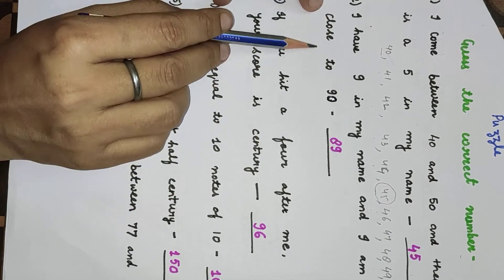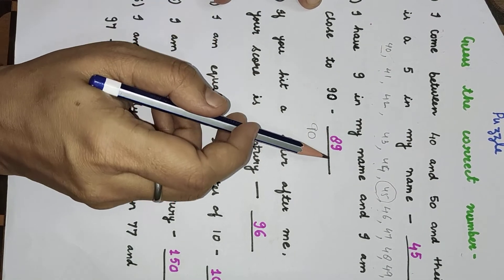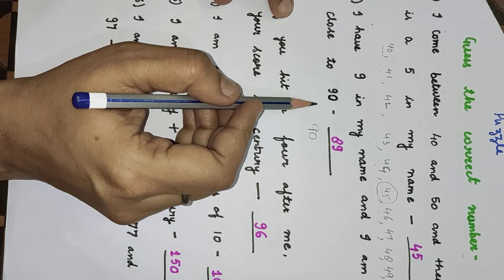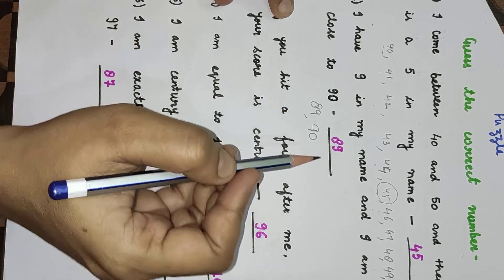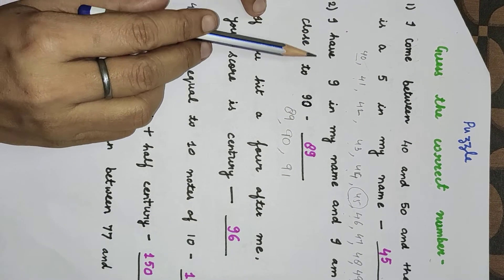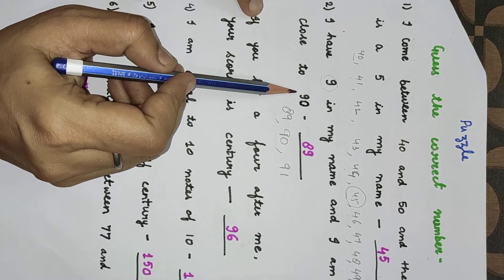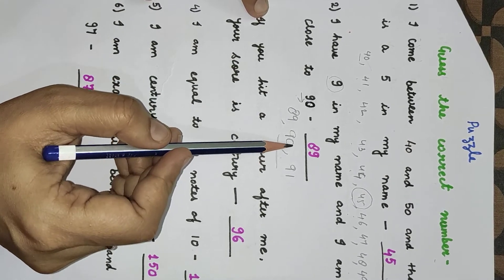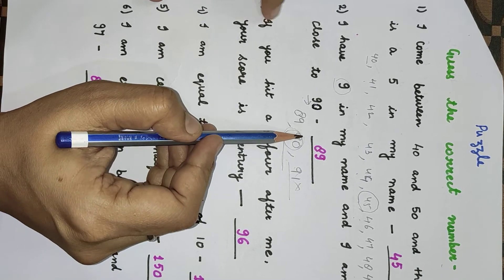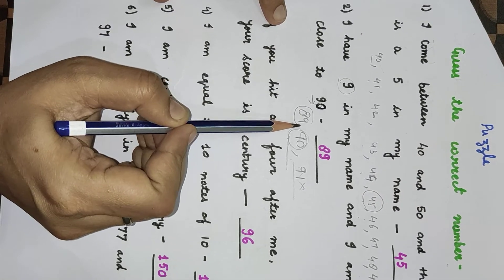Next puzzle: I have 9 in my name and I am close to 90. We will suppose 89 or 91. But the question says close to 90 and it has not crossed 90. So 91 and 92 we will not take. The nearest digit with a 9 that has not crossed 90 will be 89.